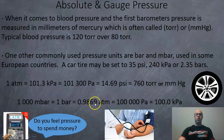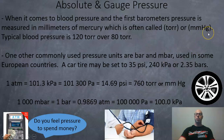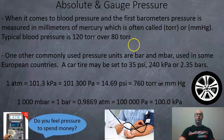When it comes to blood pressure and the first barometers, pressure is measured in millimeters of mercury, often called the torr. Hg is the chemical symbol for mercury and typical blood pressure is 120 torr over 80 torr. One other commonly used unit is the bar and the millibar; some European countries use this for car tire pressure.